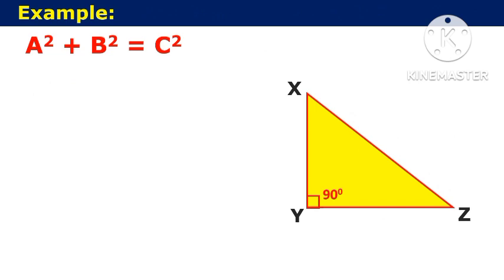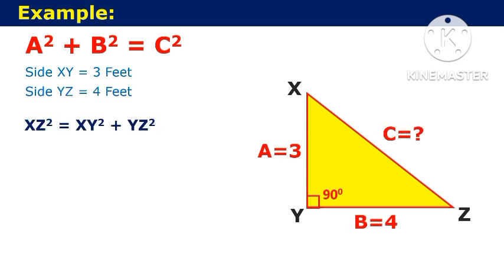Let us understand the above formula with the help of an example. Suppose if side XY equals 3 feet and side YZ equals 4 feet, then we can write side XZ² = XY² + YZ². That is, XZ = √(XY² + YZ²). Now substituting the values of XY and YZ in the above equation...